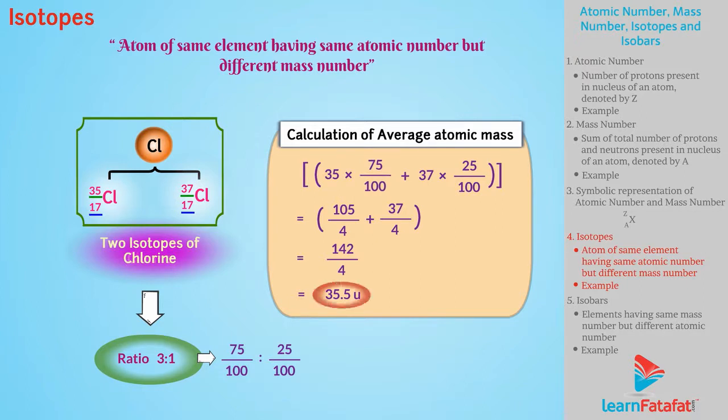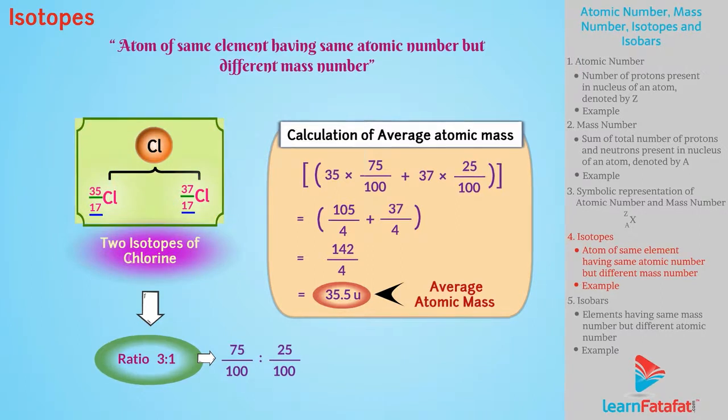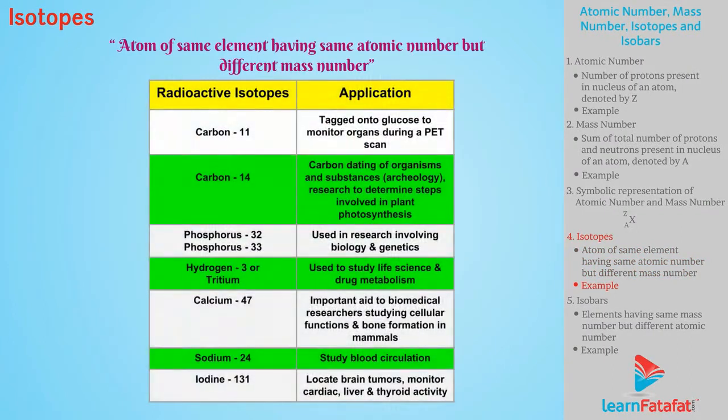35.5 shows average atomic mass of Cl-17-35 and Cl-17-37. Following are some isotopes and their uses.